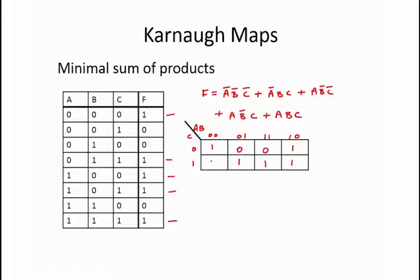Next, we try to merge as many adjacent ones as possible into groups that are of size that is a power of 2. Note that adjacent ones can be merged across rows, along columns, and across the edges of the Karnaugh Map like a torus.